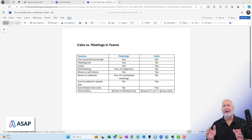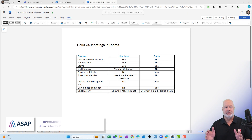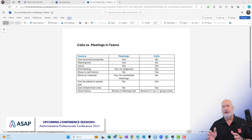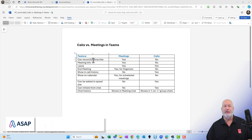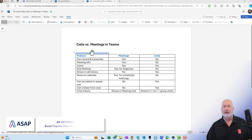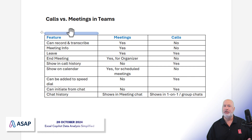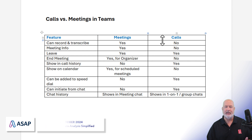So I have a table here. It really doesn't matter what the table is, but this one has to do with calls versus meetings and Teams. I have three columns. If you notice, if I mouse over the feature column, I get that little blue icon at the top. Same thing for meetings and same for calls.